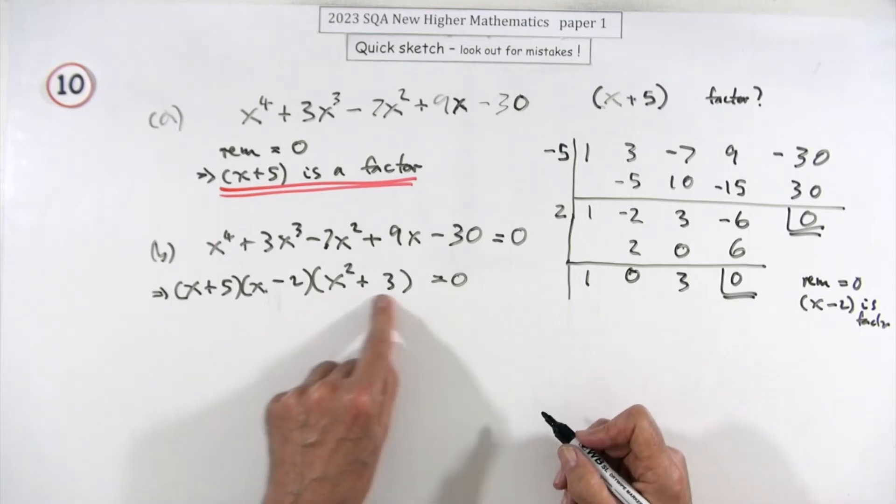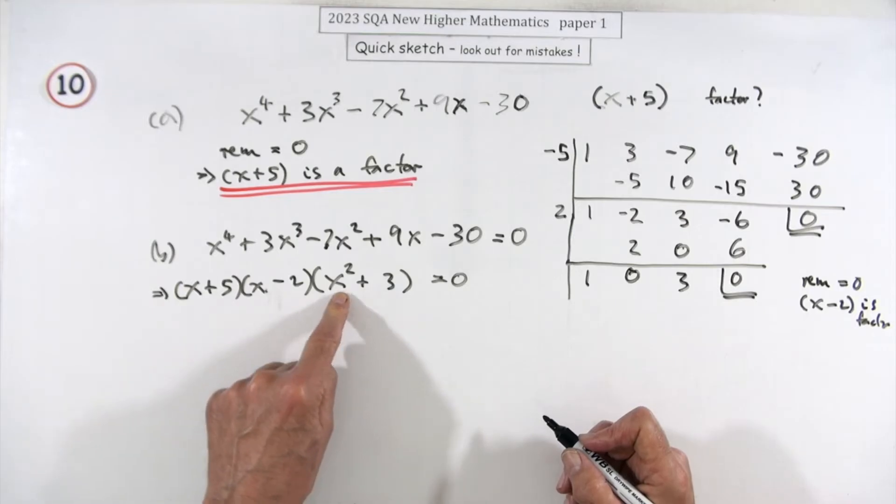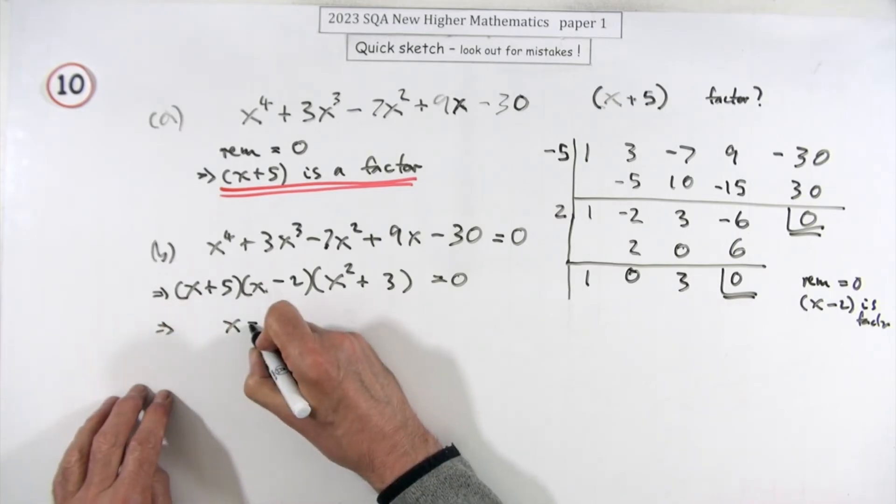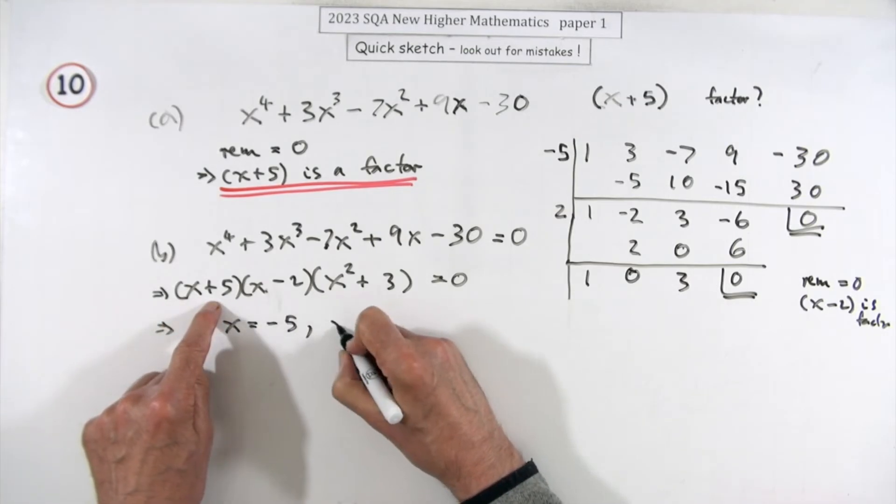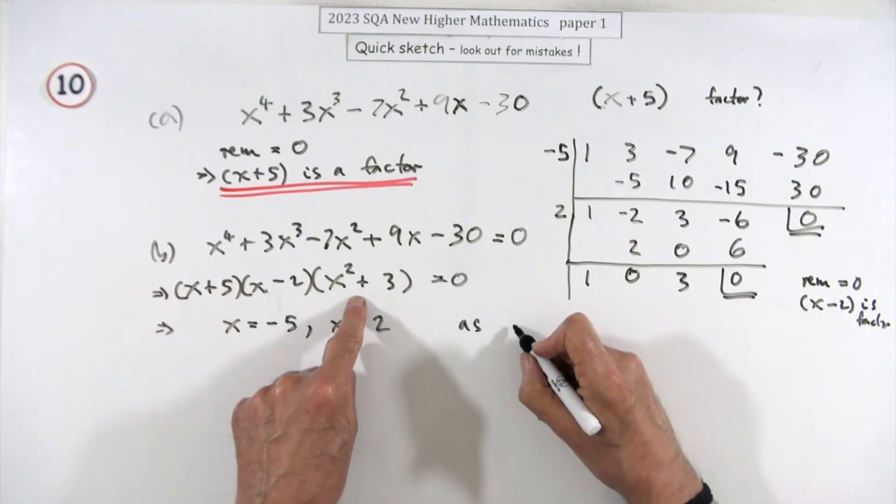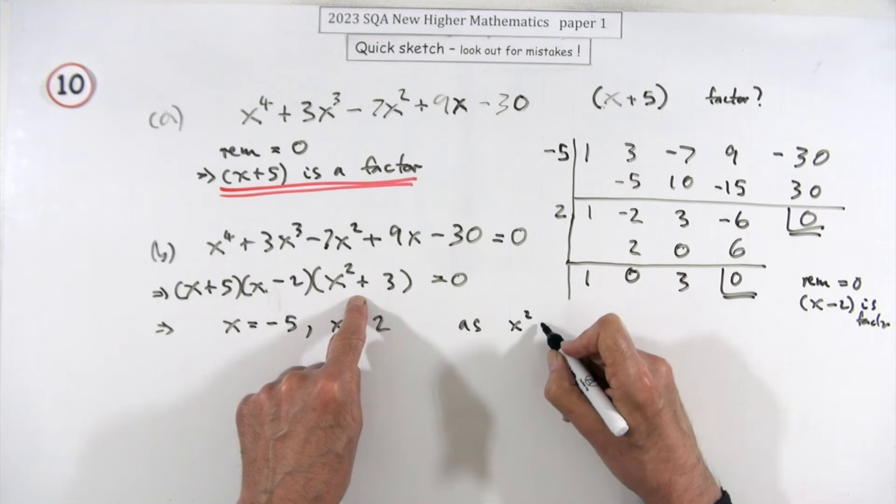That's no use because x² + 3 can't possibly factorize or equal zero. The lowest x² could get to is zero, so the lowest x² + 3 can ever be is three. You've only got two roots, so the only solutions are x equals negative five or x equals two.